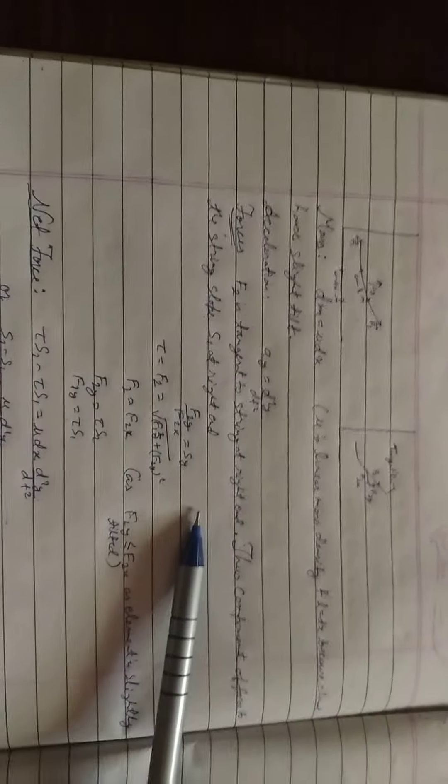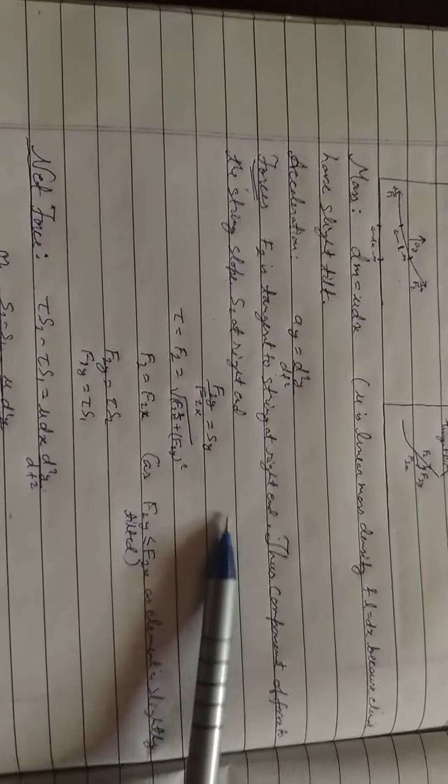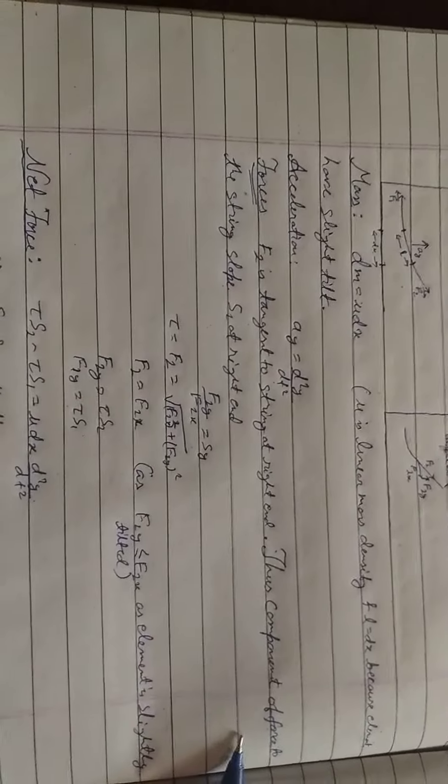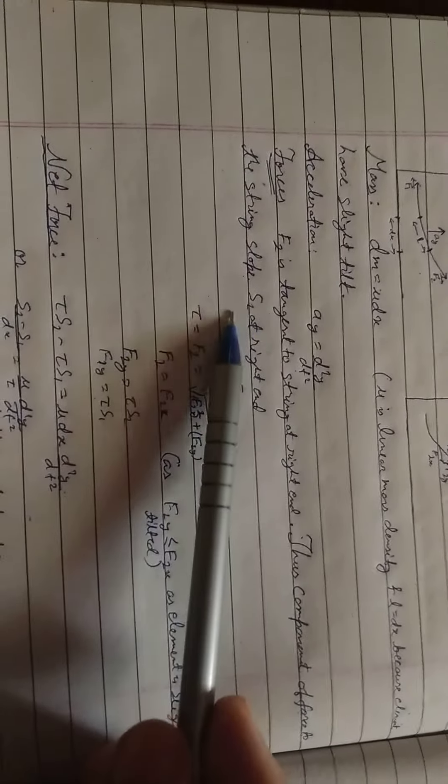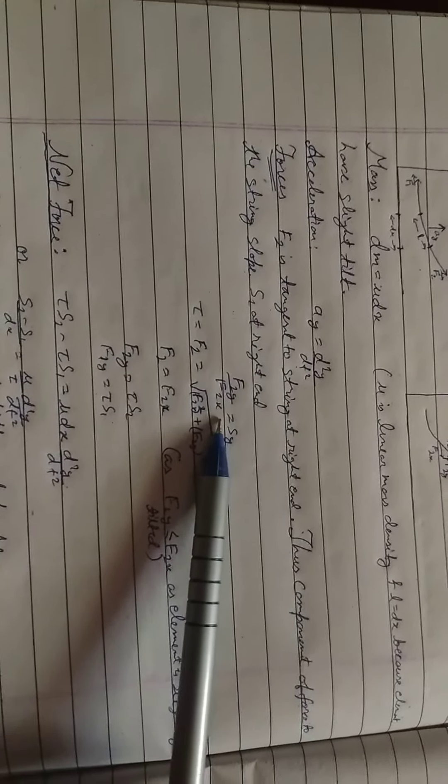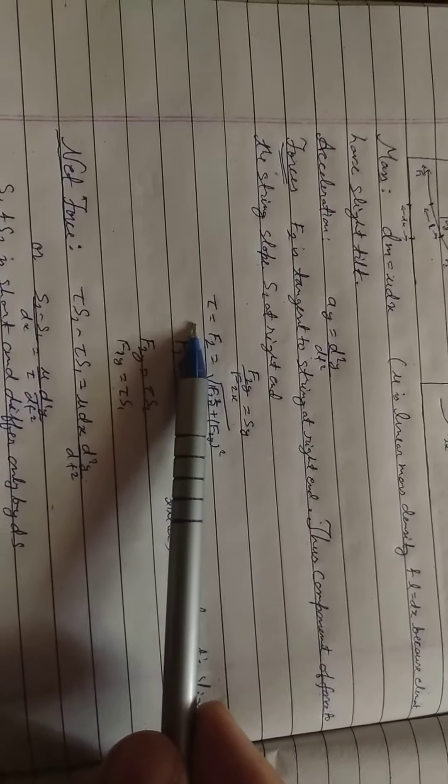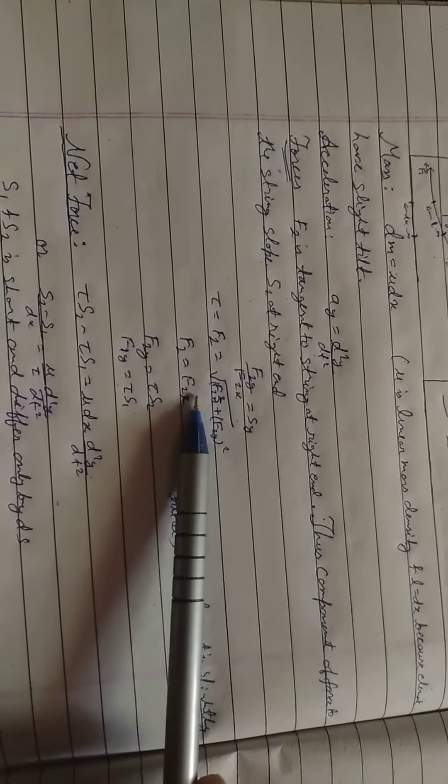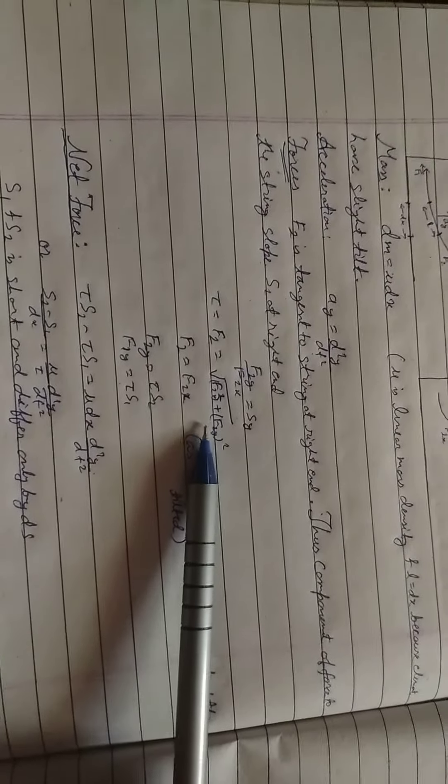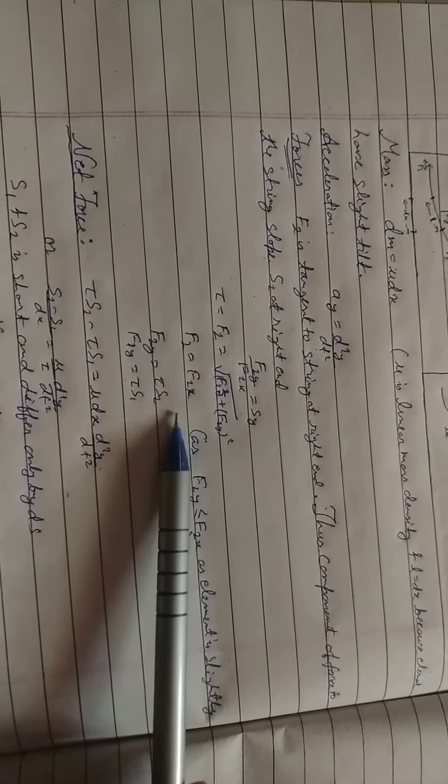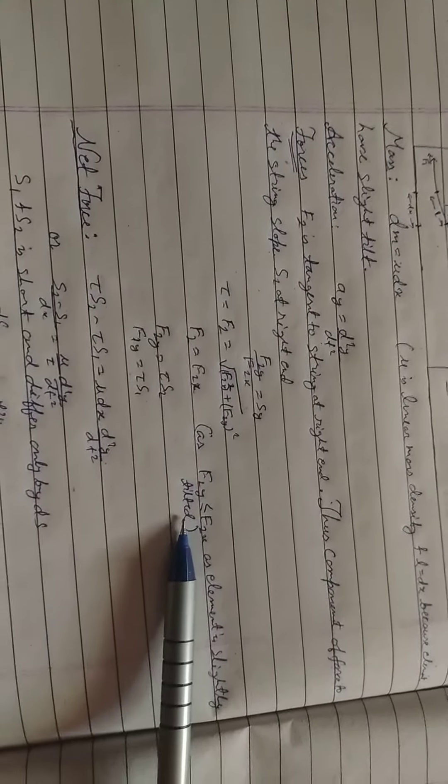The component of force to the string slope s2 at the right end is f2y. f2x is equal to s_y tau. f2 is equal to square root of f2x square plus f2y square. f2 is equal to f2x, as f2y is smaller than f2x.